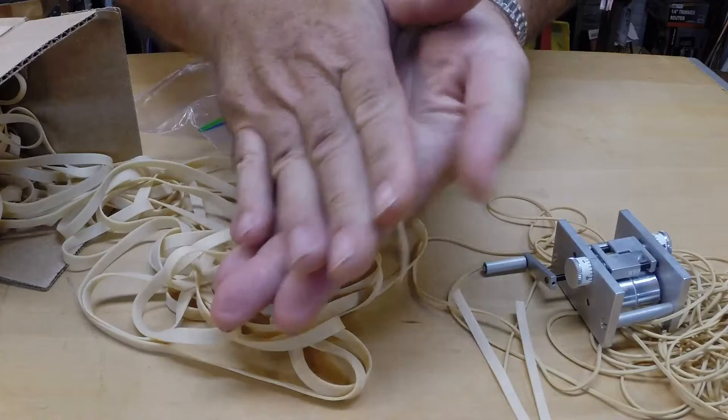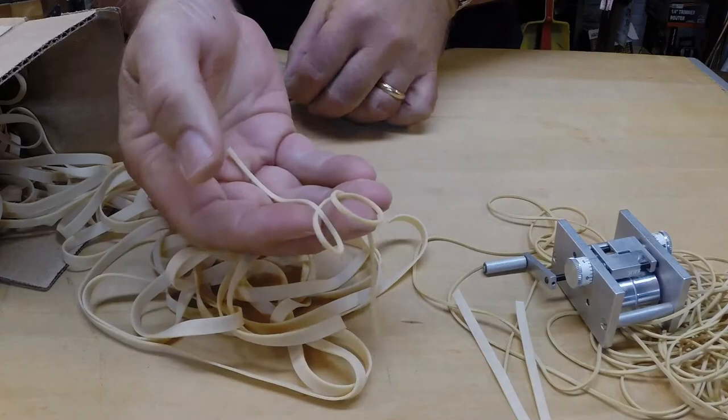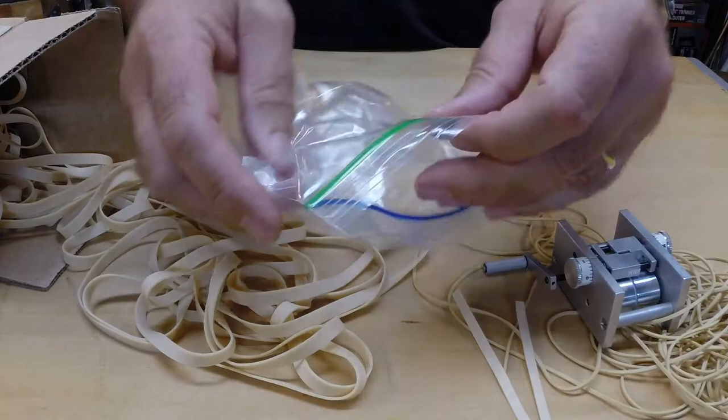Before doing anything with the rubber, the coating of talc powder must be removed. This is done by holding the rubber in your hands while washing them with plain soap and water. Once cleaned and dried, the rubber should be placed in a sealable sandwich bag to keep it clean.